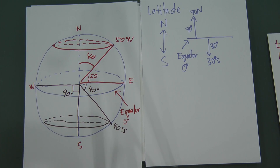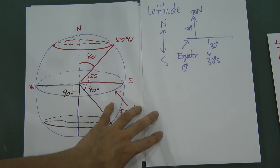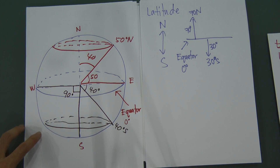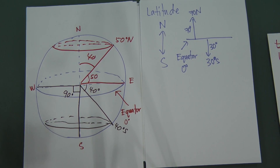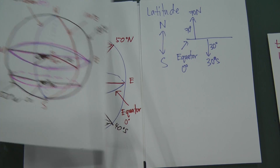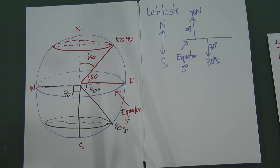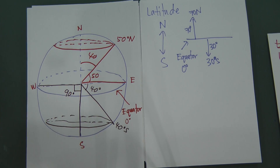That is a brief introduction about latitudes and longitudes. I will do more videos on how to find the distance, how to find average speed, shorter distance, diameter, and more. Because it would be a very long video, I've cut it into parts. Remember: longitude means moving east to west or west to east; latitude means moving north to south or south to north. Thank you for watching.